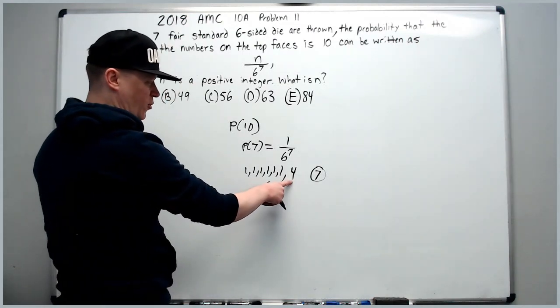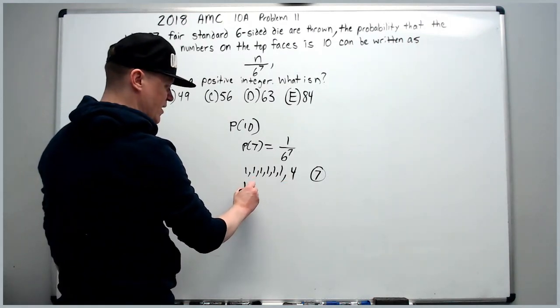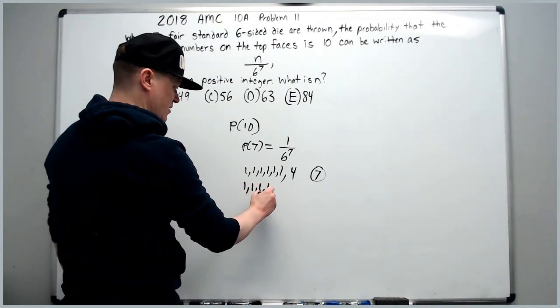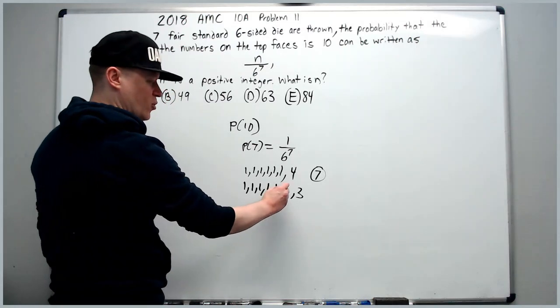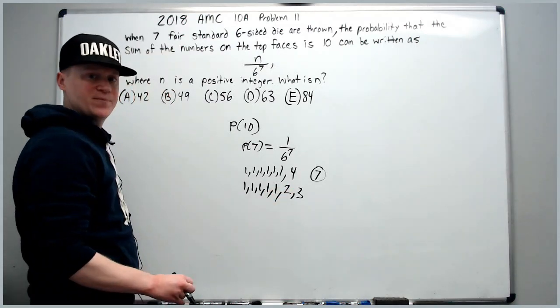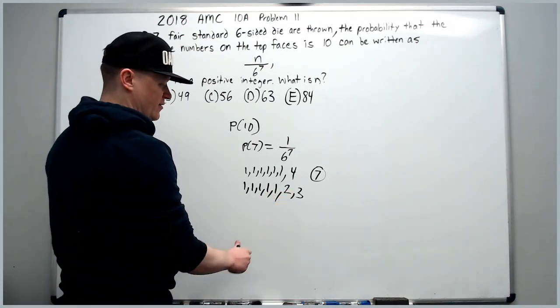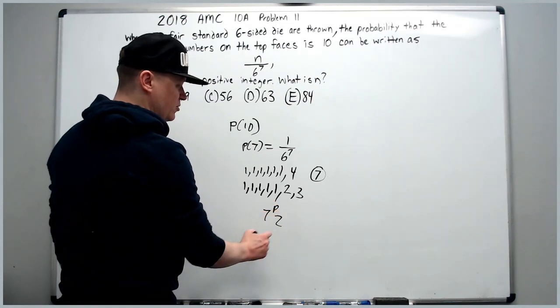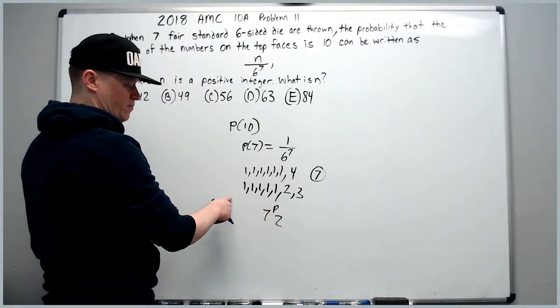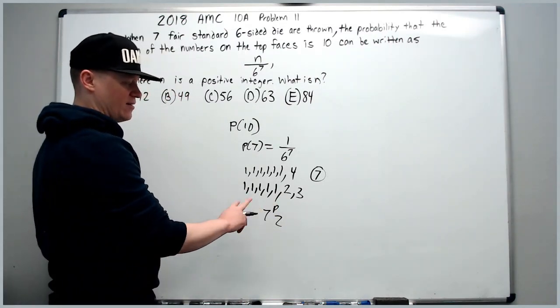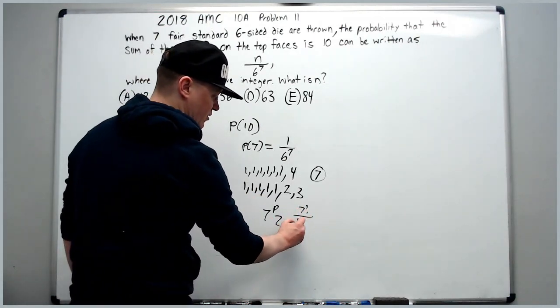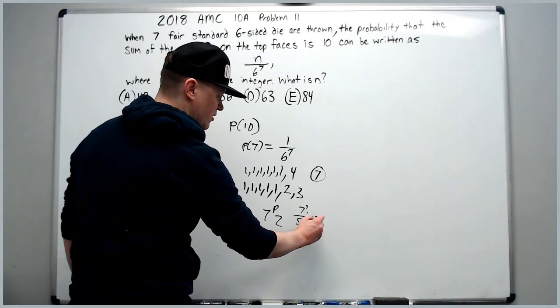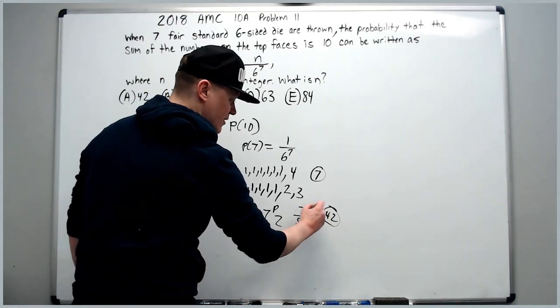Next up, we're going to make the 4 go down to 3, and if we make it go down to 3, we're going to need 1 from somewhere else, so we'll put a 2. This one can be thought of as 7P2. It's basically pick 2 places and the order matters. So you will get 7 factorial over 5 factorial, which is 42 outcomes.